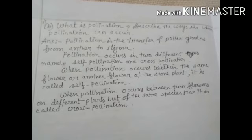Number 5: What is pollination? Describe the ways in which pollination can occur. Answer: Pollination is the transfer of pollen grains from anther to stigma. Pollination occurs in two different types, namely self-pollination and cross-pollination. When pollination occurs within the same flower or another flower of the same plant, it is called self-pollination.